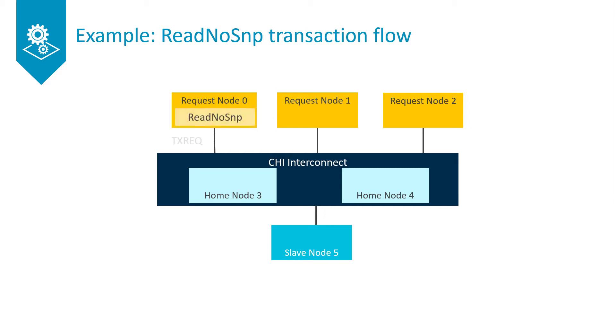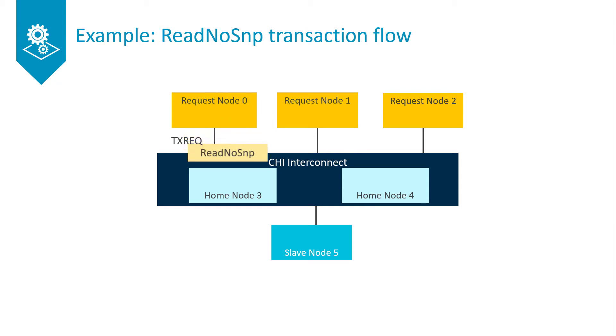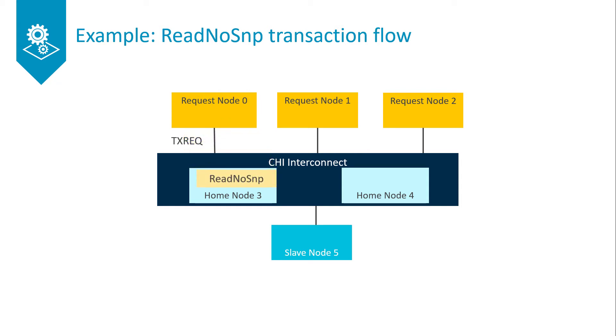Request node 0 issues a read no snoop to the interconnect, targeting home node 3. The transaction gets sent on the request node's TX-REQ channel.